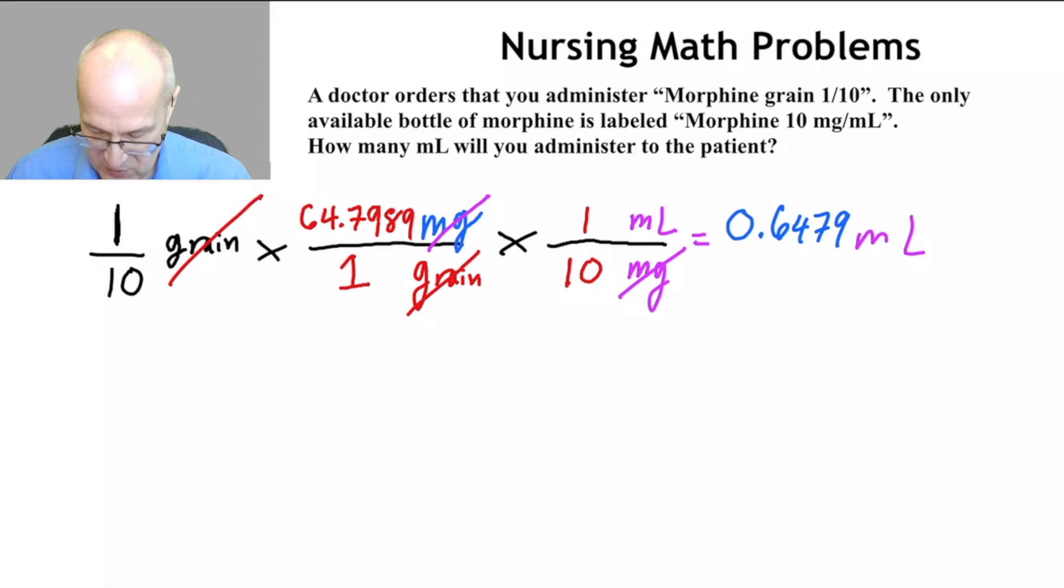So now if we want to round this to one significant figure, it would be 0.6 milliliters. That's one significant figure.